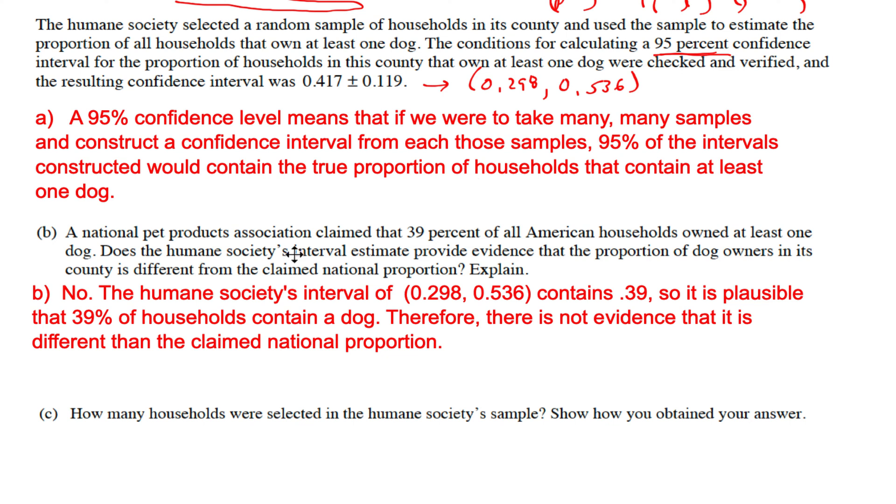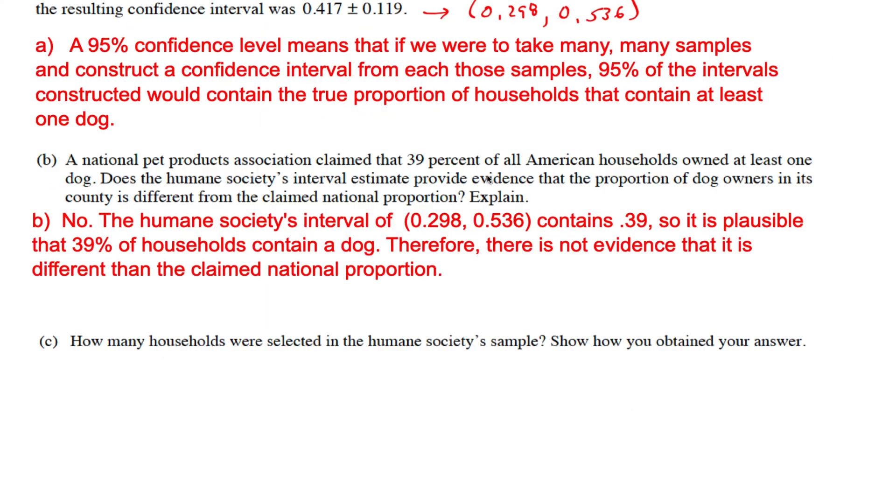The specific question here is: does the humane society's interval estimate provide evidence that the proportion is different than 39? The answer would be no. The humane society's interval contains 0.39, so it's plausible that 39% of households contain a dog. Therefore, there is not evidence that it's different than the claimed national proportion.